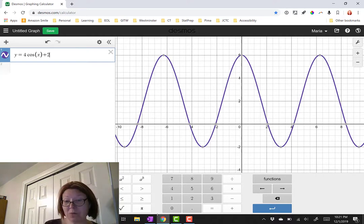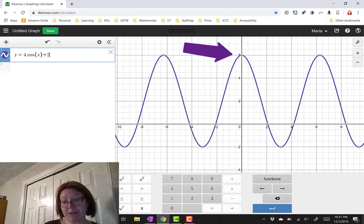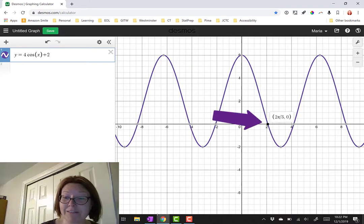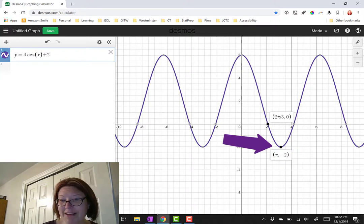If we start at the y axis, the graph starts at 0 comma 6. It goes down from there with a smooth curve, traveling through the point 2 pi over 3 comma 0 to a minimum value of pi comma negative 2.